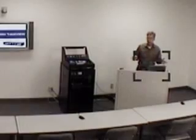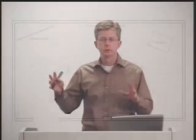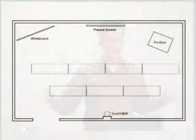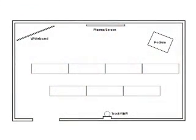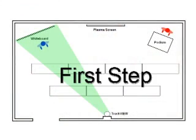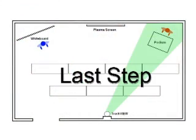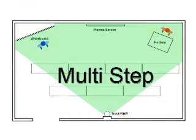Because the system tracks motion, there is no badge or collar required to be worn by the presenter for the camera to track. Triggers on the system can be configured in three ways: first step, last step, and multi-step.